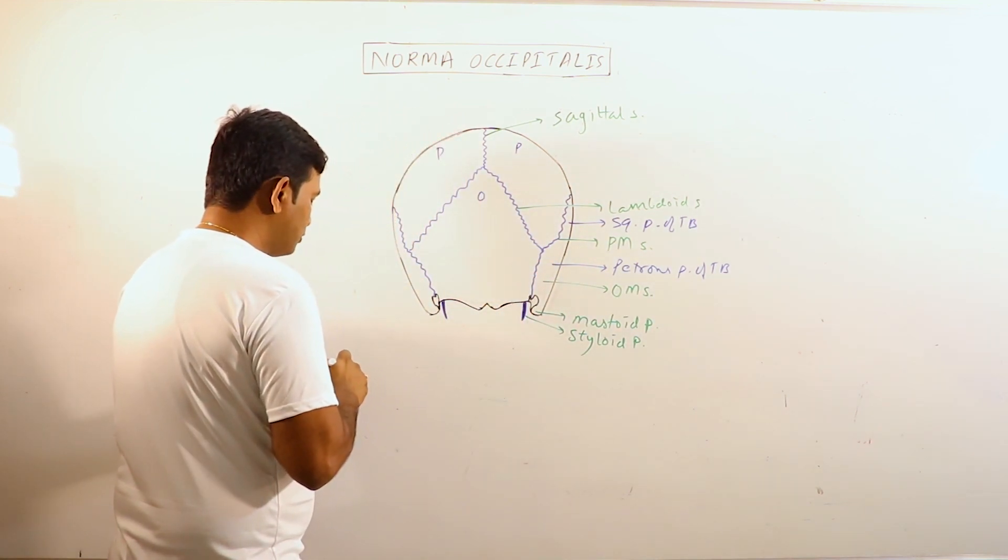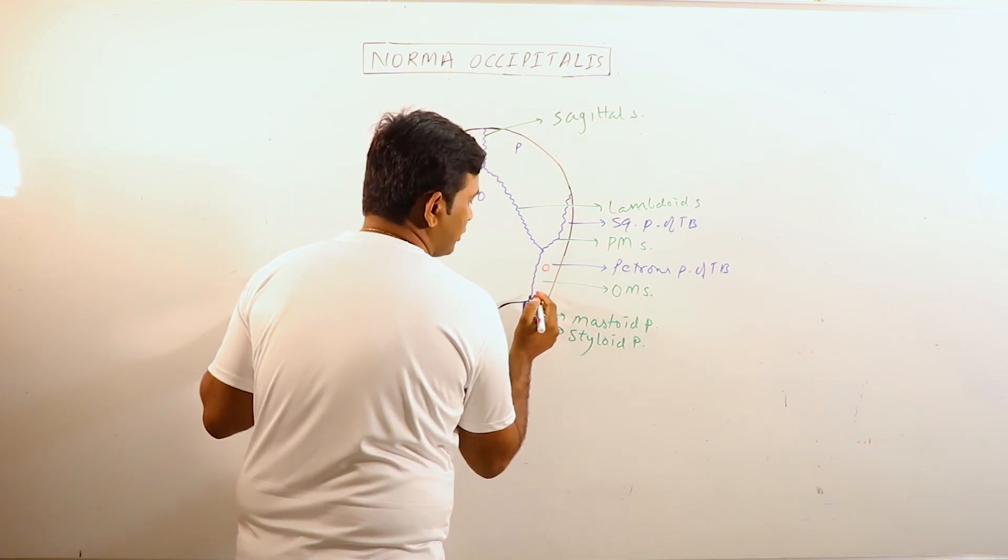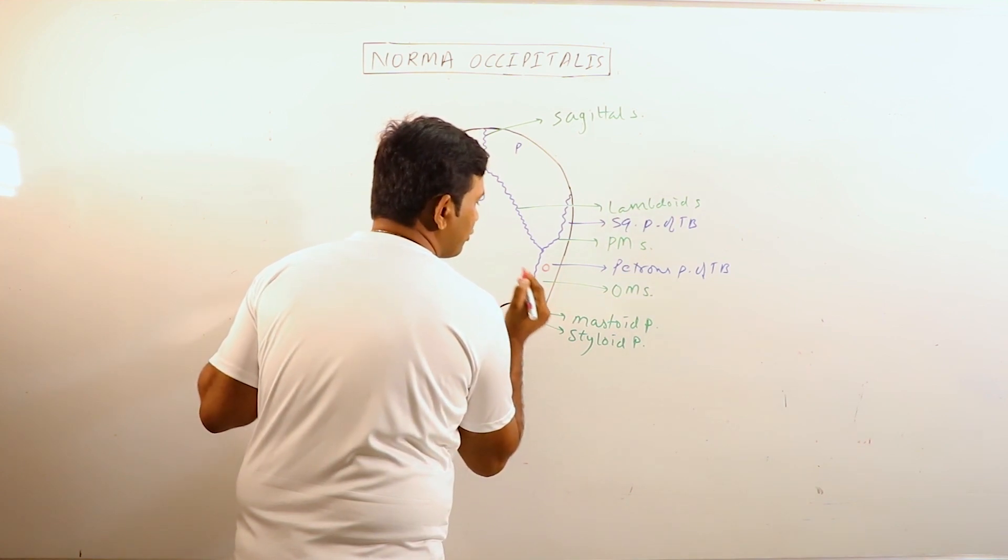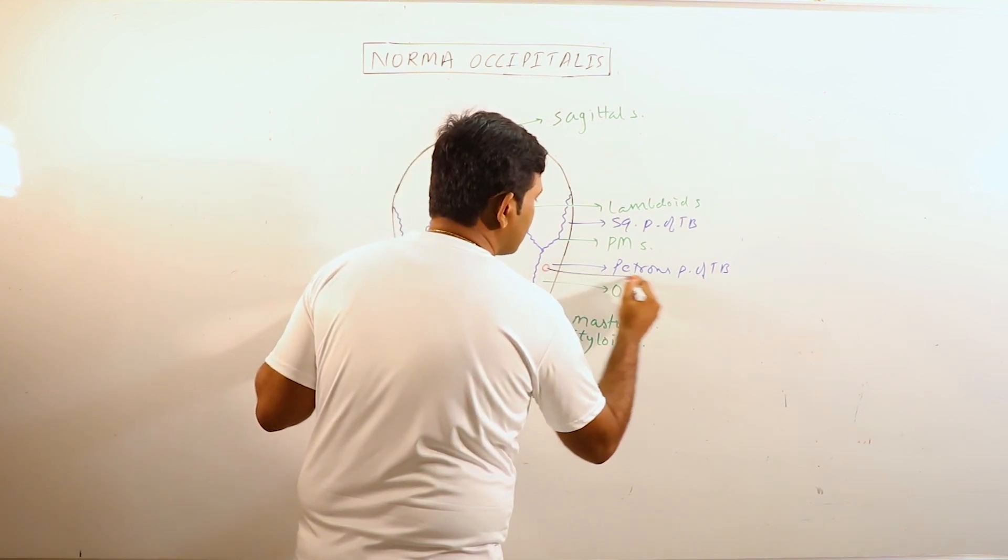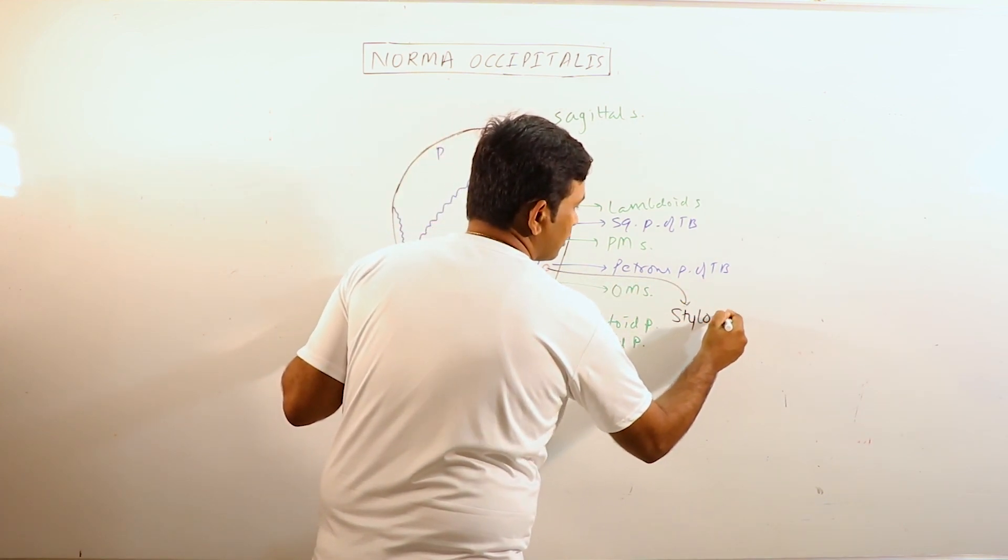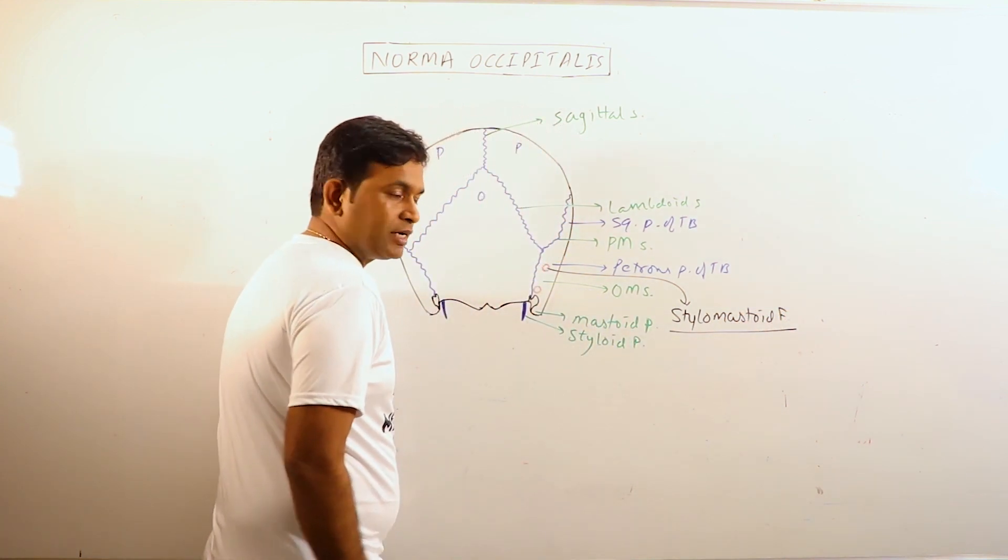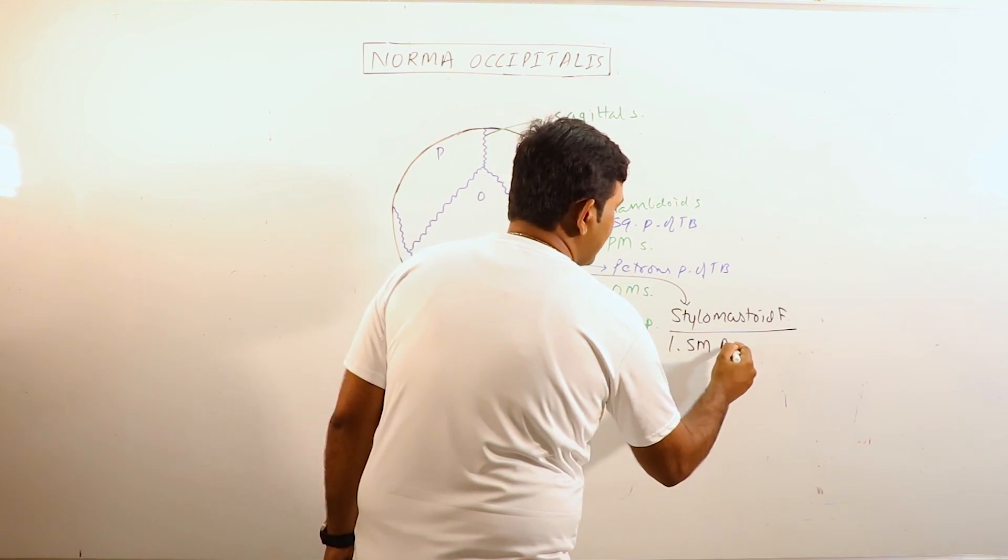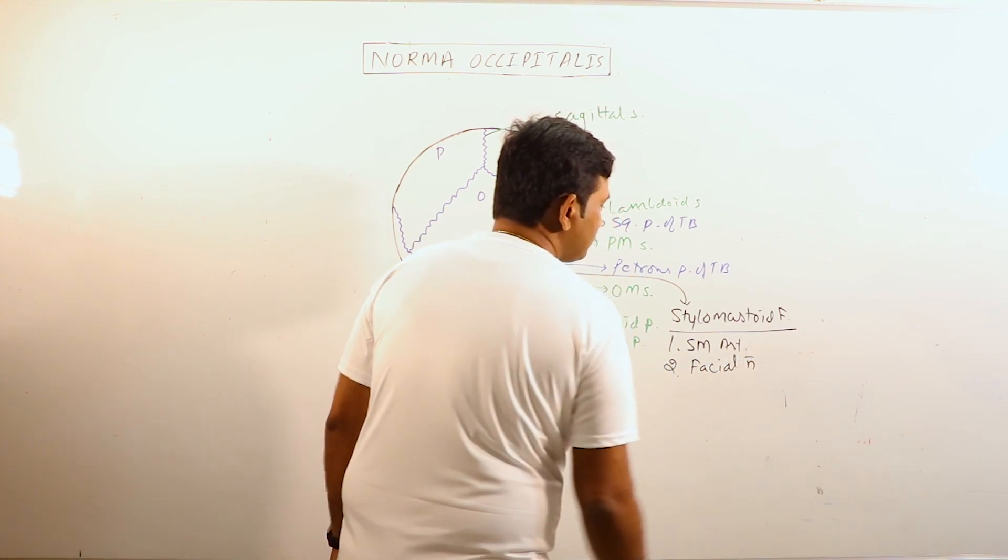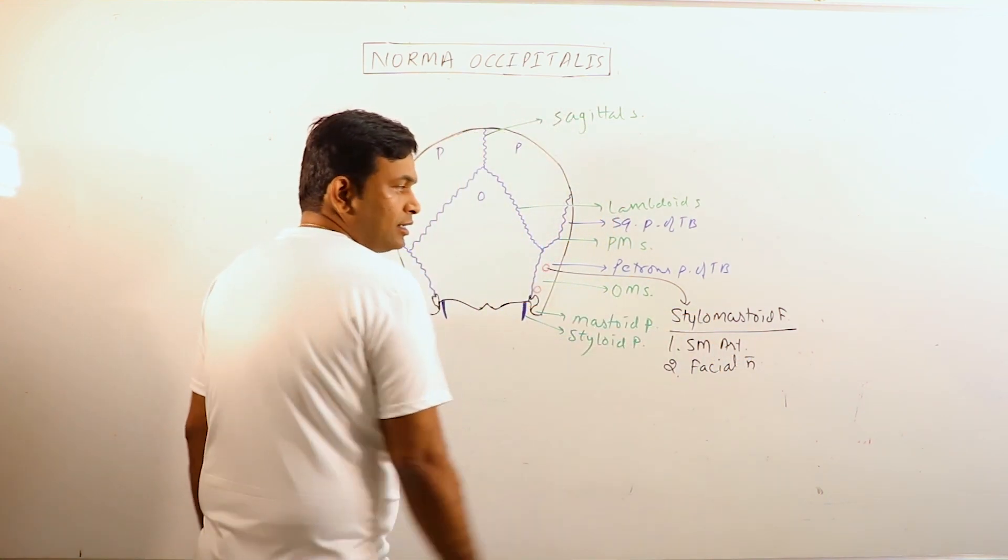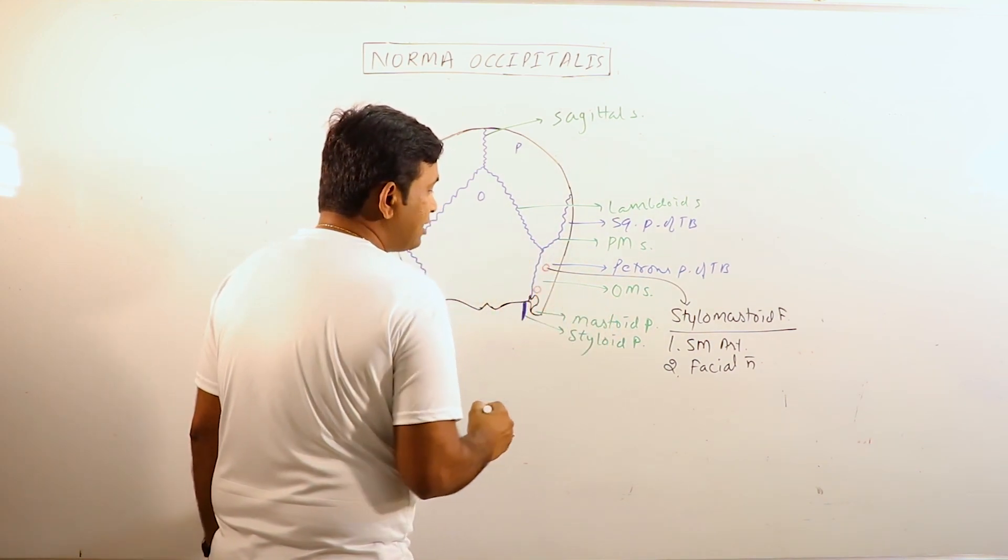Now, we can observe styloid process here and mastoid foramen here. Styloid foramen transmits the styloid artery and the facial nerve. Basically, styloid foramen indicates the end of facial canal. It represents the end of facial canal.